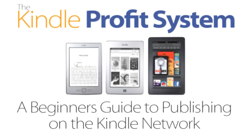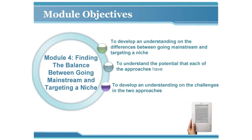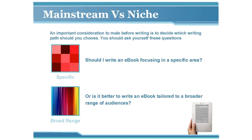Learning module four: Finding the balance between going mainstream and targeting a niche. Your module objectives are to develop an understanding of the differences between going mainstream and targeting a niche, to understand the potential that each approach has, and to develop an understanding of the challenges in the two approaches.